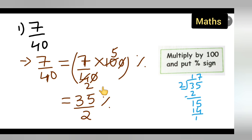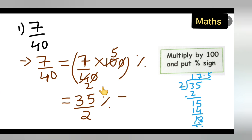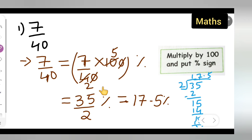Put a decimal point and add 0, then 2 fives are 10, so you get 0. The answer is 17.5 percent.